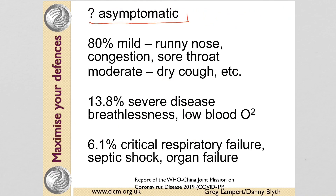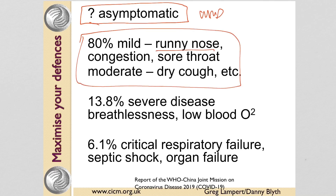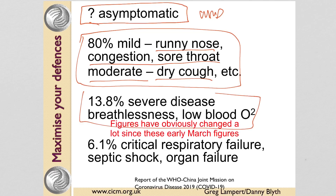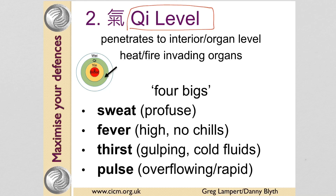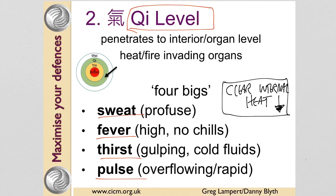For an unknown number of people this is very mild with very few symptoms; for most it's a fairly typical cold with congestion, sore throat, and dry cough. For some it becomes a severe disease, and as we're finding out, for a small percentage it becomes critical. The stage of deeper penetration is the Qi level — here we get the four bigs: sweating, fever, thirst, and a big pulse. At this level we're no longer releasing the exterior; we're clearing internal heat and draining downwards.